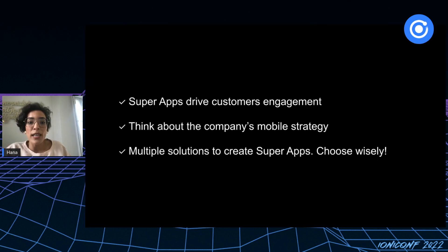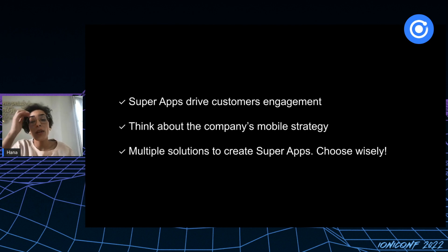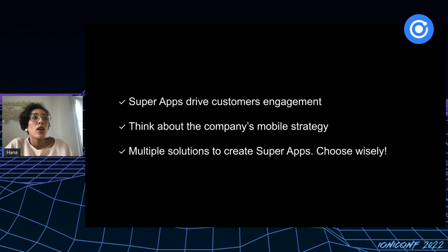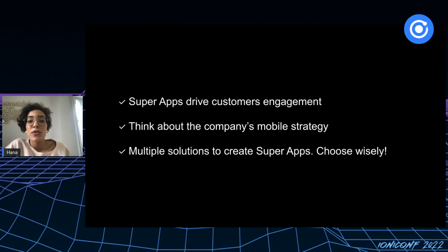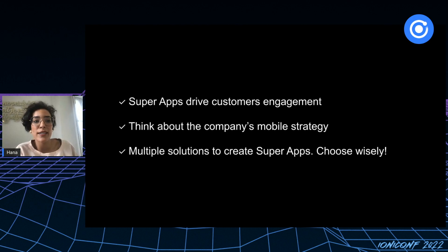To summarize: super apps reinforce user engagement and offer new ways to retain users longer on mobile applications. If you're going to build a super app, the first step is thinking about your strategy and the nature of your partnerships if you're adding third-party services. Choosing the right technical solution can be really challenging, especially without advanced expertise in web or mobile — but luckily Ionic Portals is easy to use and can spare you many constraints like security and additional services. Thank you for listening, and feel free to ask questions.